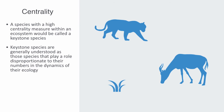Since the prey numbers are low, the keystone predator's numbers can be even lower and still be effective. Yet without the predators, the herbivorous prey would explode in numbers, removing all the dominant plants and dramatically altering the dynamics of the ecosystem.